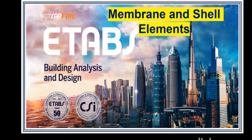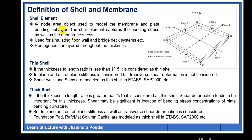Let me start with the definition of shell and membrane. Shell element is a four-node area object used to model the membrane and plate bending behavior. This type of element can be modeled as shell or membrane element. The shell element captures the bending stress as well as the membrane stress, and it is used for simulating the floor, wall, and bridge deck system. It can be homogeneous or layered throughout the thickness of the element.